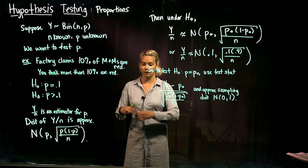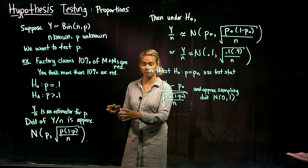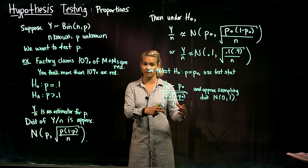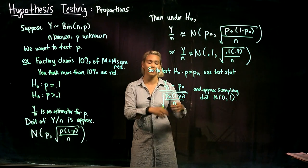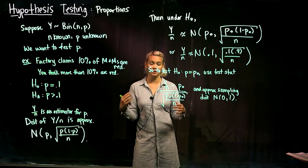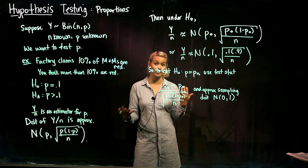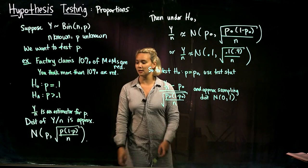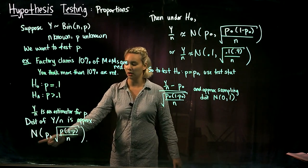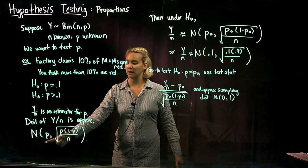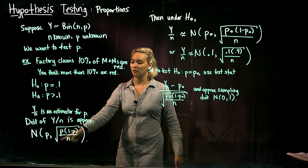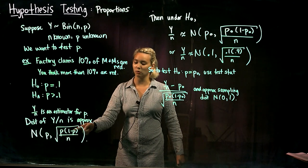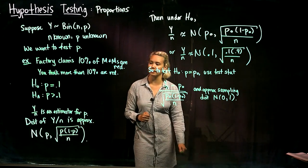In other words, if we take a sample of n M&Ms and calculate p-hat, and then do that again, another sample of n M&Ms, calculate p-hat for it, and then again and again, how much is that sample proportion going to vary and what's its distribution? The distribution of our sample proportion is approximately normal with mean p and standard deviation - the square root of p times 1 minus p over n.